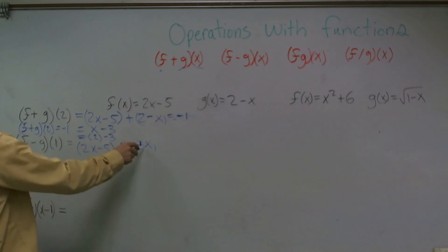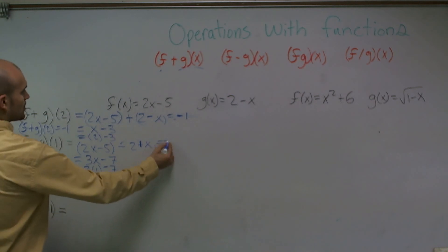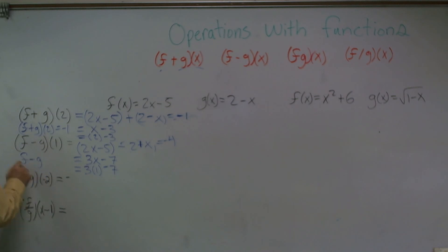Therefore, 2x plus a positive x is going to be 3x. Negative 5 minus 2 is a negative 7. Now, I plug in my last term. 3 times 1 minus 7 is going to equal a negative 4. So therefore, I can say f minus g of 1 equals negative 4.